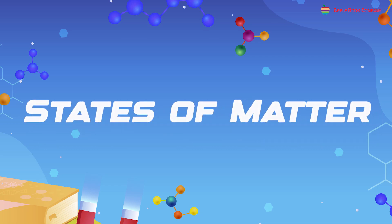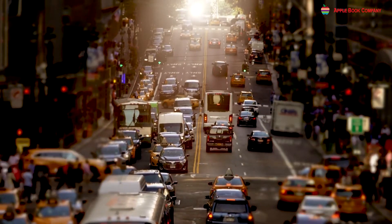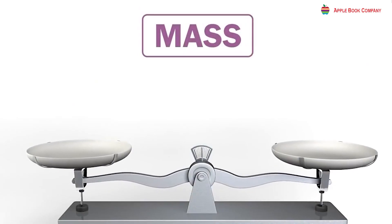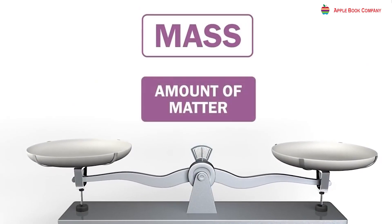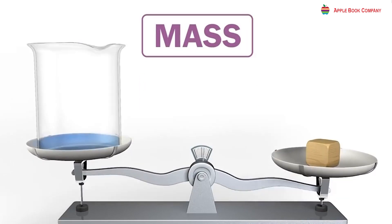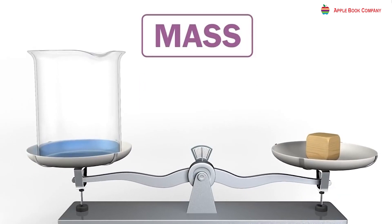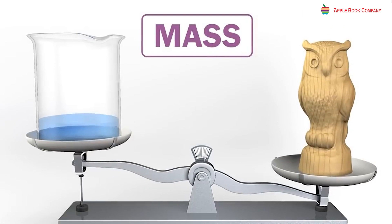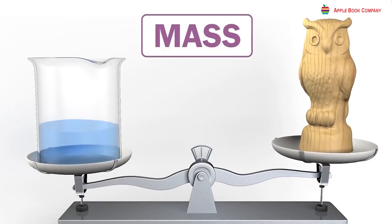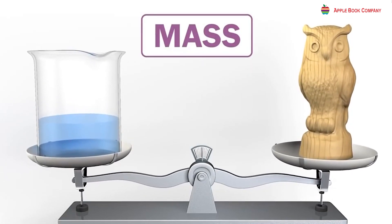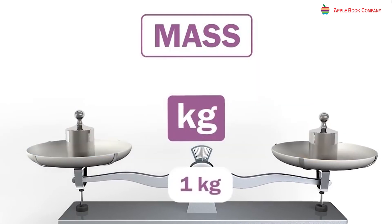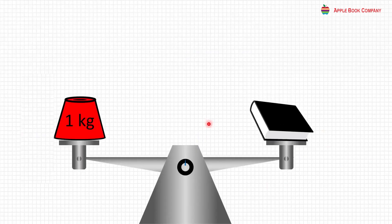States of Matter. Everything around us, including ourselves, contains matter. Matter is something that has mass and occupies space. The mass of a thing refers to the amount of matter present in it. The weight of an object is how heavy it is and is measured in units like kilograms or pounds. For example, if a book weighs 1 kg, it means that it has a mass of 1 kg.